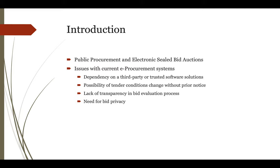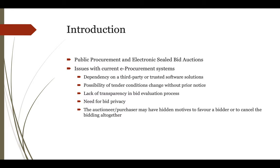There is a need for bid privacy. In a normal bidding process, once the bid is submitted, all bids are available to the auctioneer and he can see and try to manipulate them. Similarly, once the bidding process is over, even bids lower than the highest price are available to all participants and can be used later to manipulate future bidding processes. There is also the possibility that the auctioneer or purchaser may have hidden motives to favor a bidder or cancel the bidding altogether.